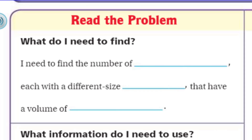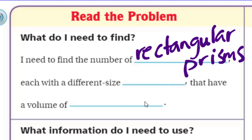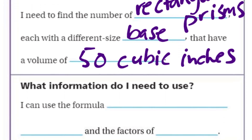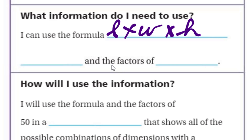First, we're going to read the problem. What do I need to find? I need to find the number of rectangular prisms, each with a different size base, that have a volume of 50 cubic inches. What information do I need to use? I can use the formula, length times width times height. I can use the formula, length times width times height.